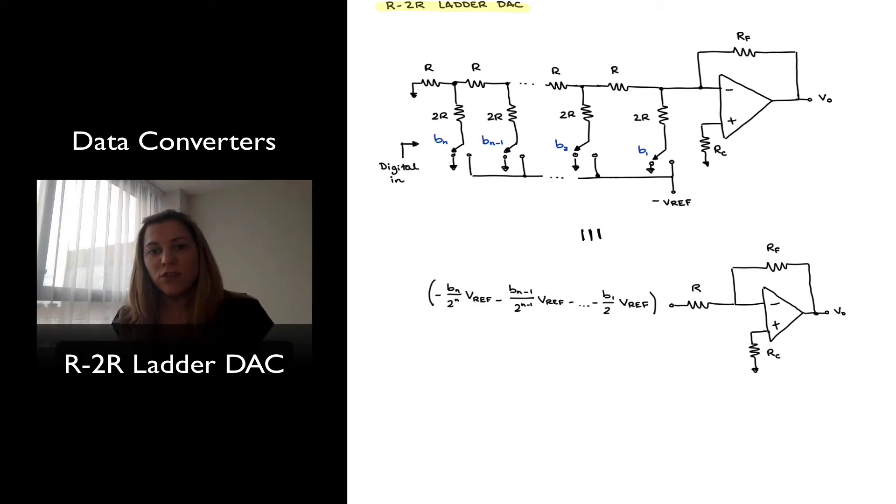Hello. The next DAC configuration that we're going to look at is that of an R-2R ladder DAC. It has similar operation to the linear combiner DAC, in the sense that it also uses a linear combiner at the output formed by that op-amp and that RF resistor.